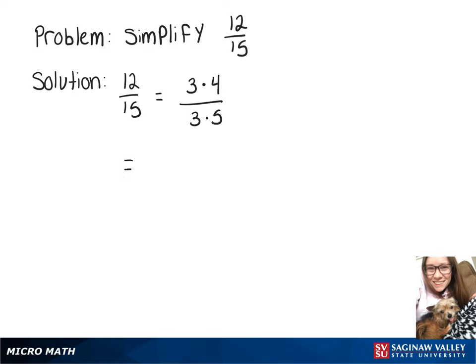I can now rewrite that as 3 over 3 times 4 over 5. And since 3 over 3 is just 1, our simplified answer is 4 over 5.